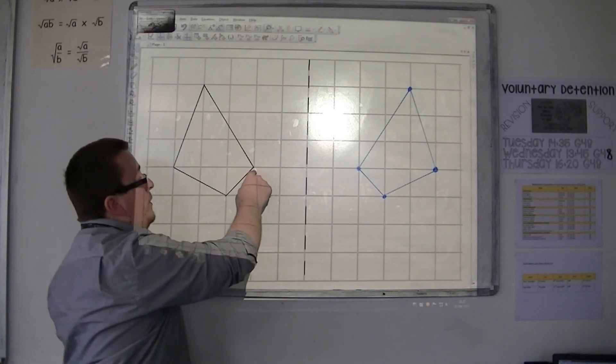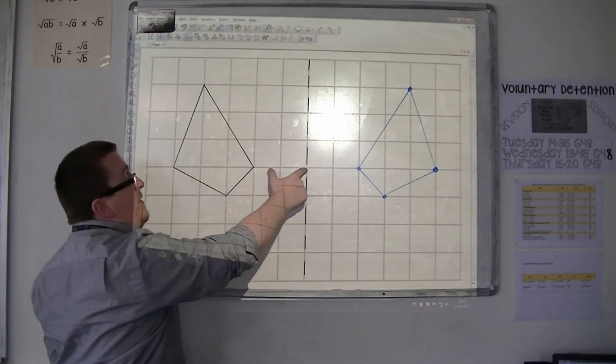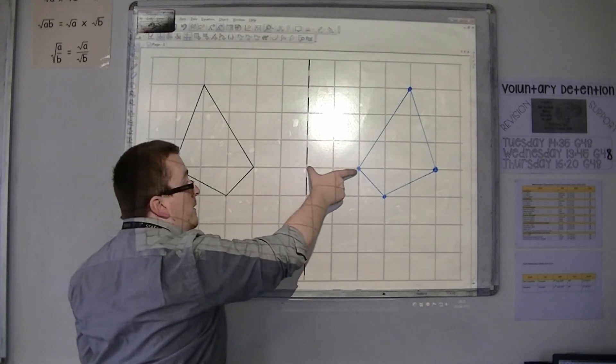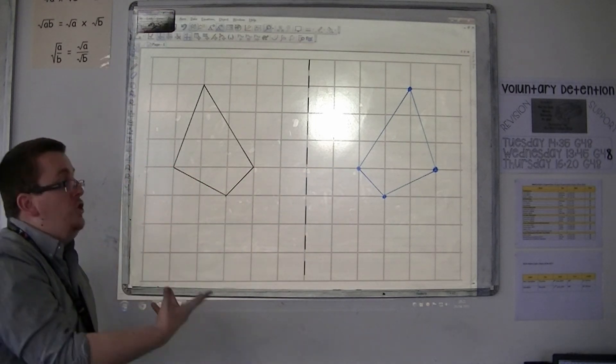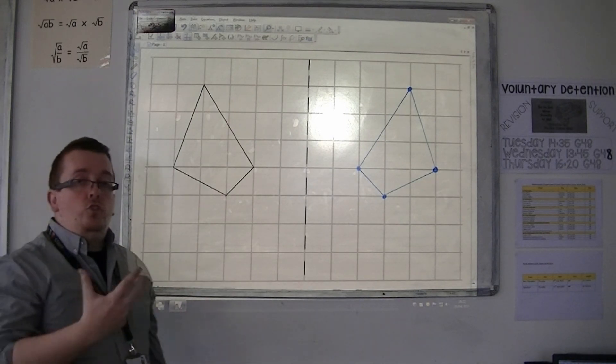Count from the corners to the mirror line, and then that same distance into the mirror. Draw a point, do this for each of the corners, and then join those points up.